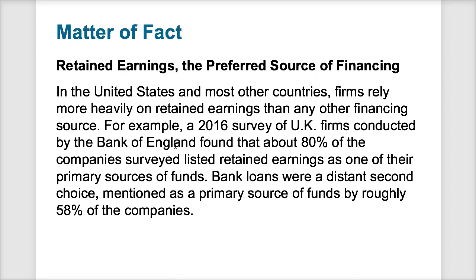Companies today prefer to use retained earnings as their primary source of financing because it's the easiest to access. The only challenge is whether the company generates enough retained earnings to fund all its projects. The first place a company goes is retained earnings, and only hits capital markets if retained earnings run out and there are valuable projects to pursue. Retained earnings is typically the quickest, easiest, and often lowest-cost source of funding for a project.